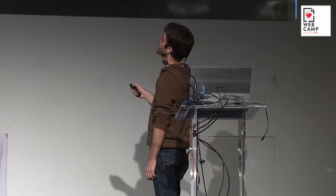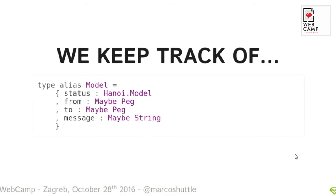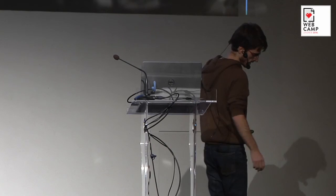This is really nice — it makes writing the other parts of the application easier and makes property-based testing easy, because you can just try random states of your model and assert things on those states. Now we've modeled our game, but if we want our user to interact with it, we need to keep track of something else: we need the status (our Hanoi model), plus the pegs the user wants to move from and to, and also a message we want to show to the user.